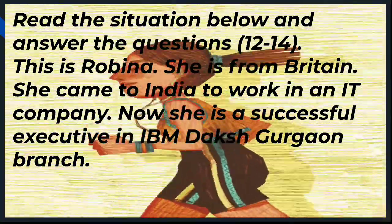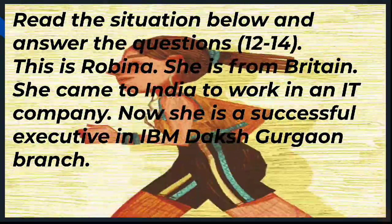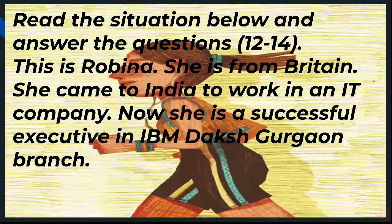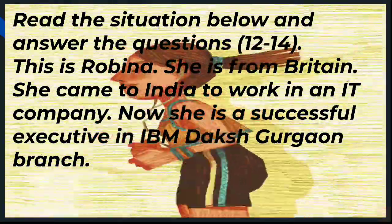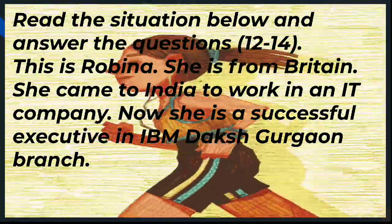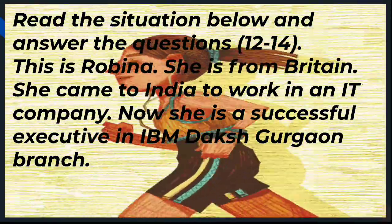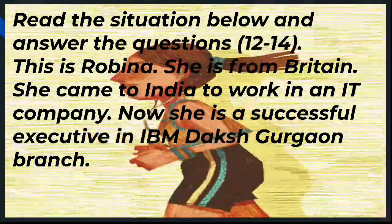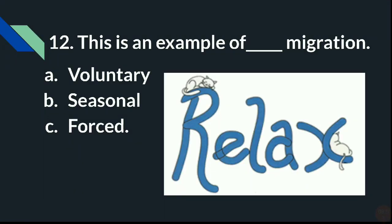Now, read the situation below and answer questions 12 to 14. This is Robina — she is from Britain and came to India to work in an IT company. She is now a successful executive in IBM Daksh, Gurgaon branch. Question 12: This situation is an example of which type of migration — A) Voluntary, B) Seasonal, or C) Forced?